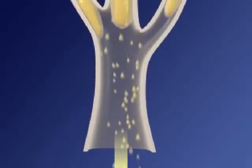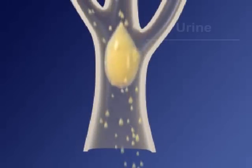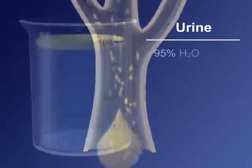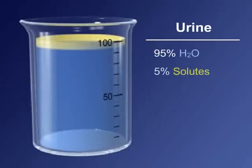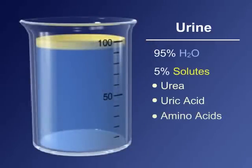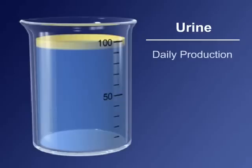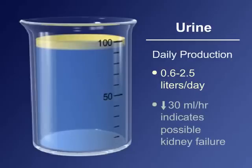The filtrate is now urine. Urine is about 95% water with a balance of urea, uric acid, amino acids, and electrolytes. The daily production is about 0.6 to 2.5 liters per day. Urine production below 30 milliliters per hour indicates possible kidney failure.